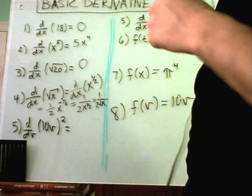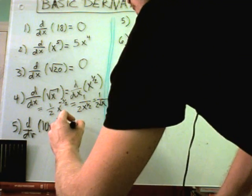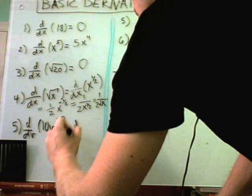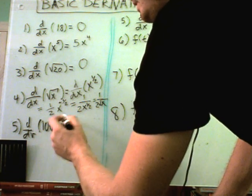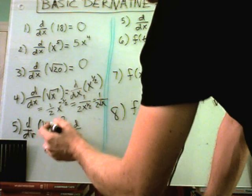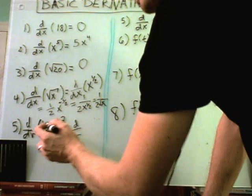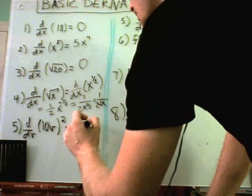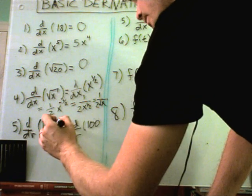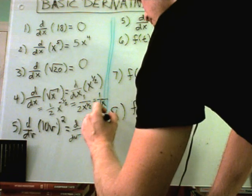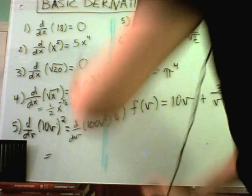This problem you have to be a little careful. The first thing you need to do is actually simplify it down. So 10v squared, and if something's in parentheses you raise both things to the power. 10 squared is going to be 100, v squared squared is going to be simply v to the fourth.